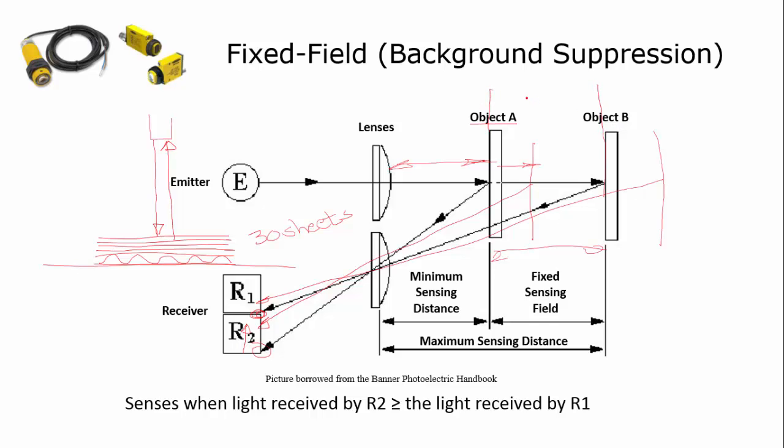You can adjust this sensor so that the fixed sensing field would be from here to here, which would be 30 sheets of paper. If I had 29 sheets of paper, I could sense it. If I had 31 sheets of paper, I could sense it.